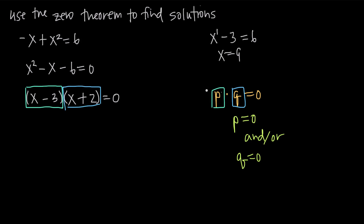Our quadratic equation is now in the same form as the equation in the zero theorem. All we need to say is that in order for this equation to be true, one or both of these factors must be equal to zero. So either x minus three must be equal to zero, and/or x plus two must be equal to zero.